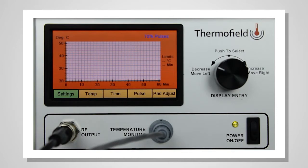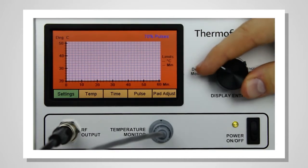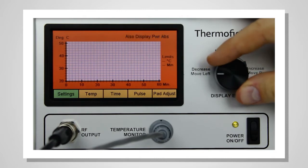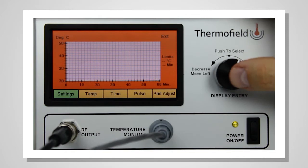The advanced settings include pulse percentage, pulses per second, megahertz, watts, and calibration settings. When you're finished, turn the knob until the display reads EXIT, and push the knob to exit.